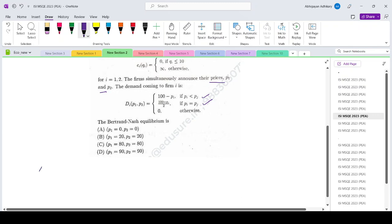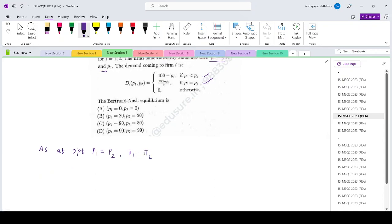So at optimal, P1 equals P2, and both the firms will be getting half of the market demand by this logic. The profit of both the firms will be the same for all four combinations. So if we check option by option, we can easily get the answer.